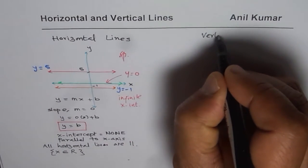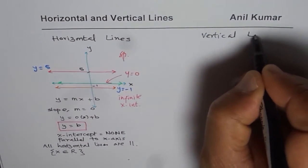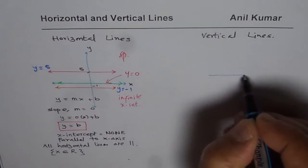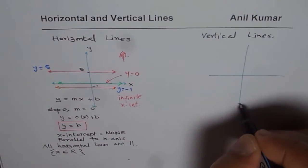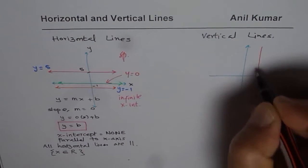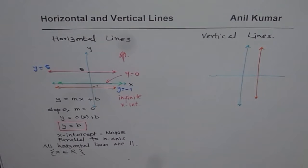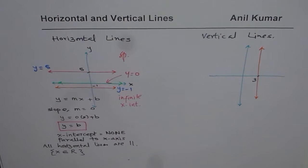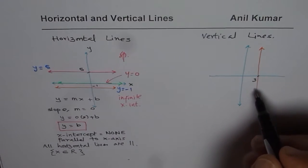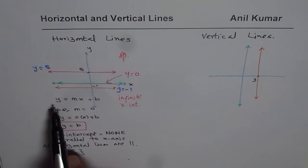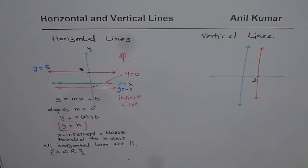Now let's look into vertical lines. We'll follow the same pattern — a coordinate plane — and let me sketch a vertical line. Let us say this is the vertical line, which has, this time, an x-intercept, and let this x-intercept be at 3. Now if x-intercept is 3, what is the equation of this line? One question is: can you write slope-intercept form y equals to mx plus b for this particular equation?